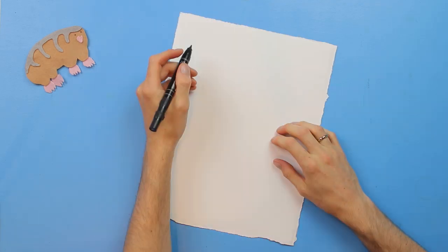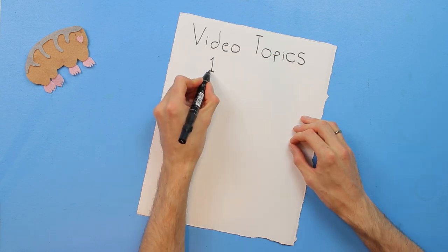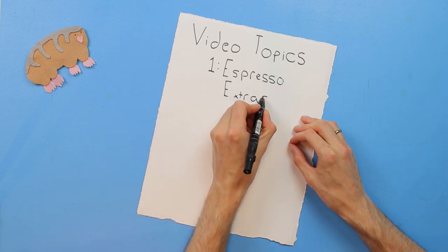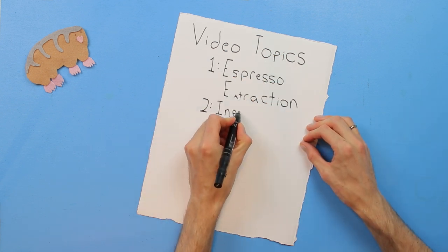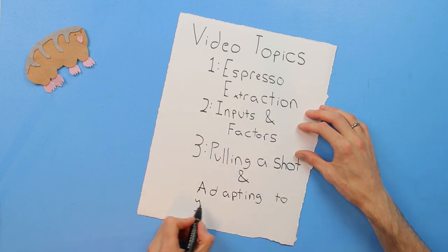I also have a list of videos and articles after you finish mine, so check them out in the description. This is a short video series in three parts. The first describes a theory of espresso extraction, the second reviews the inputs and factors of espresso brewing, and the third goes through pulling a shot.